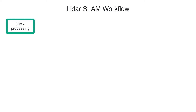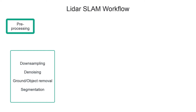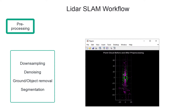You can use different techniques like downsampling, denoising, and ground removal to process your point cloud data. This kind of processing is important to achieve better accuracy and performance.